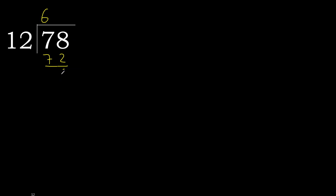Subtract 6. Next, that is not a whole number, therefore complete — always complete with 0 here, with a decimal point. 0 point.